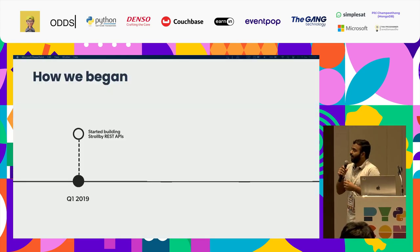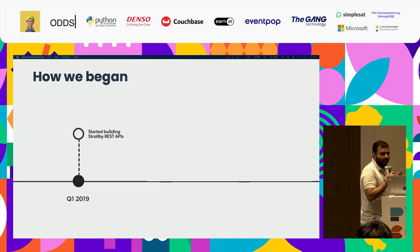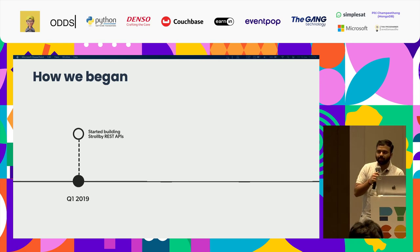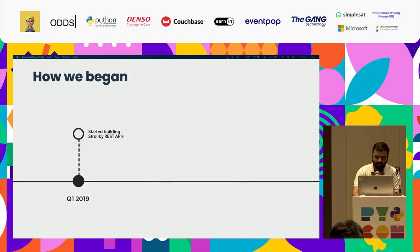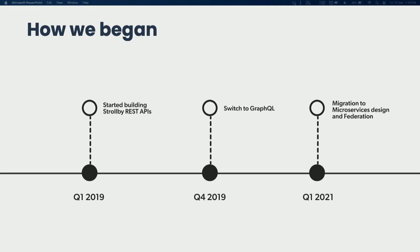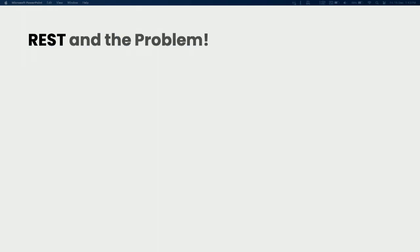Initially we had REST APIs developed and later we had many issues across our teams — like having multiple teams working on the same REST API, having multiple different devices and clients. Maintaining REST APIs was hard, so we switched to GraphQL. It took us some time but it wasn't too difficult. Then we were faced with another challenge of a growing team and had to move to microservice design and federation. Let me describe the problems we faced while developing the REST application.